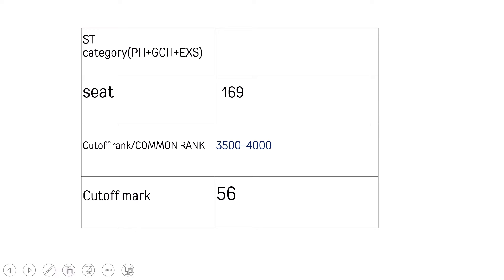We have 150 seats in the SC category. We have 169 seats in the ST category. Then we also have categories for physically handicapped, green card holders, and ex-serviceman. The ST category has 169 seats, and there are negligible seats in some sub-categories.